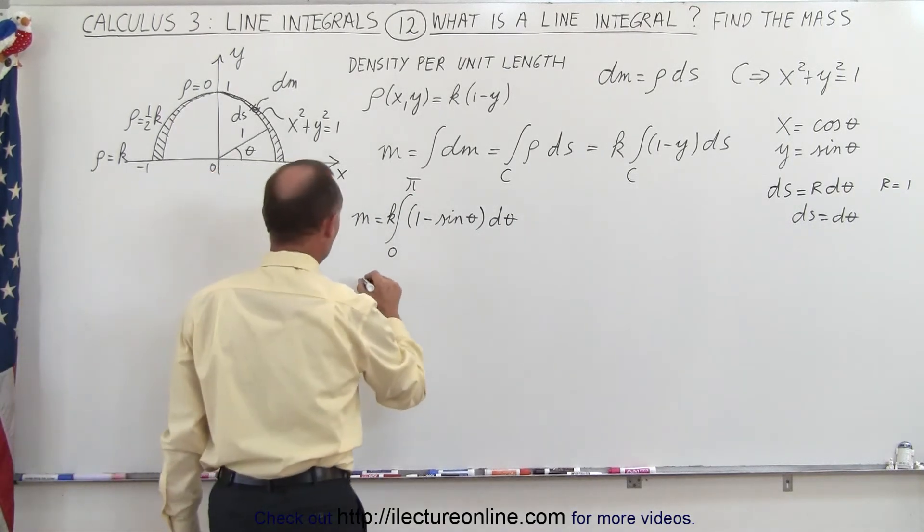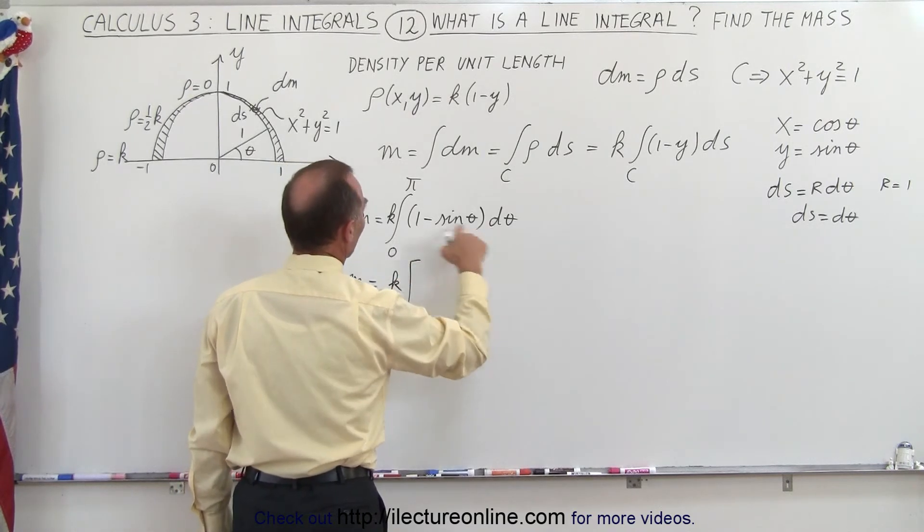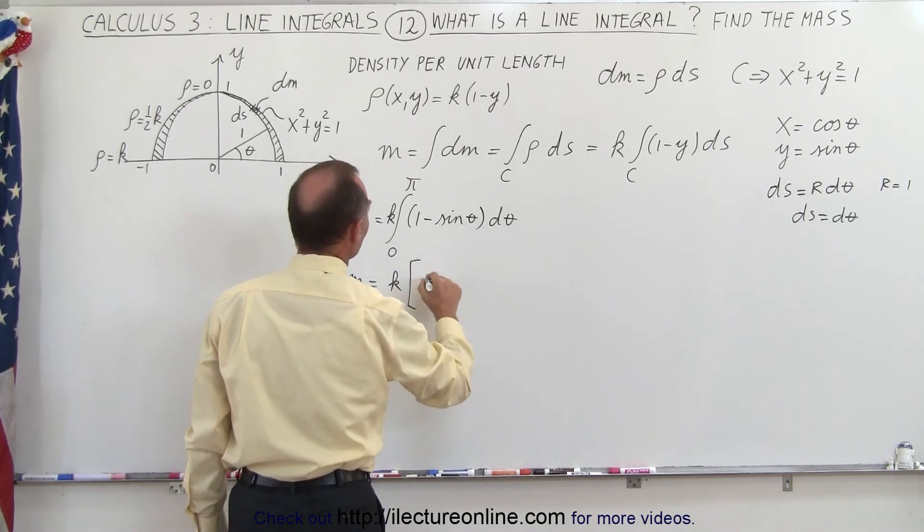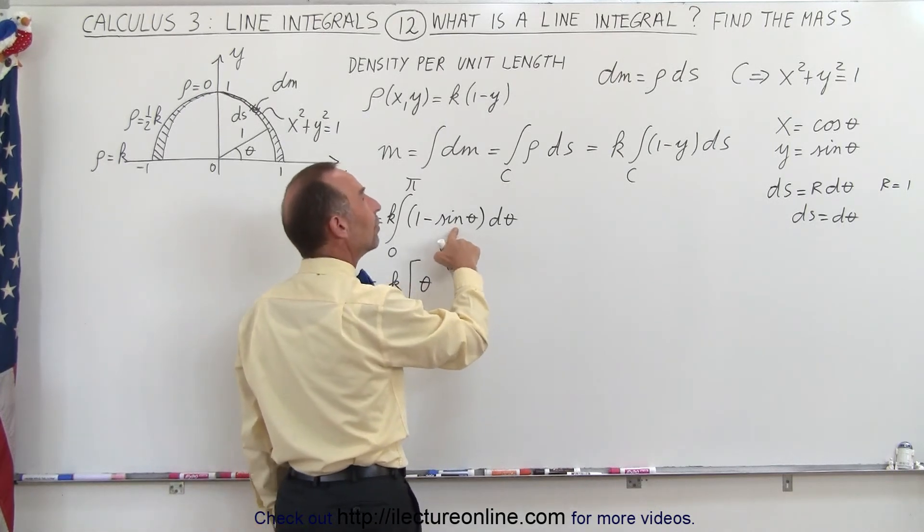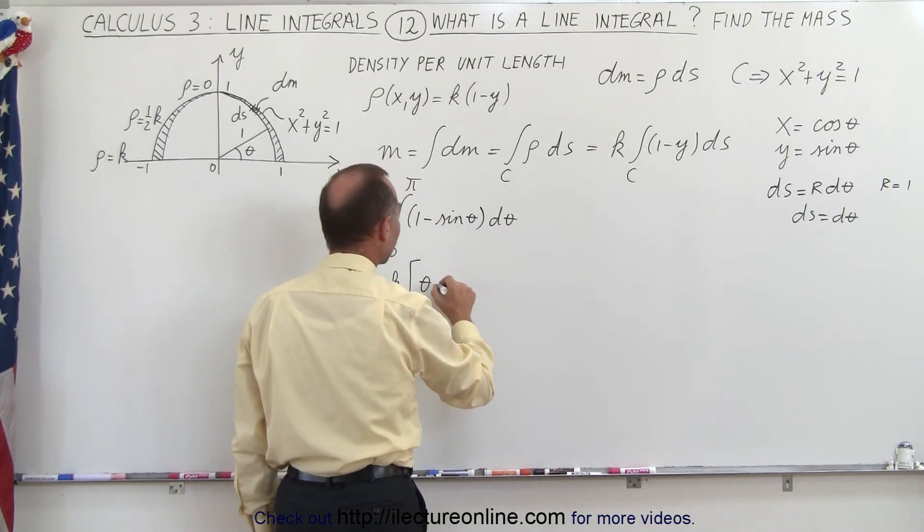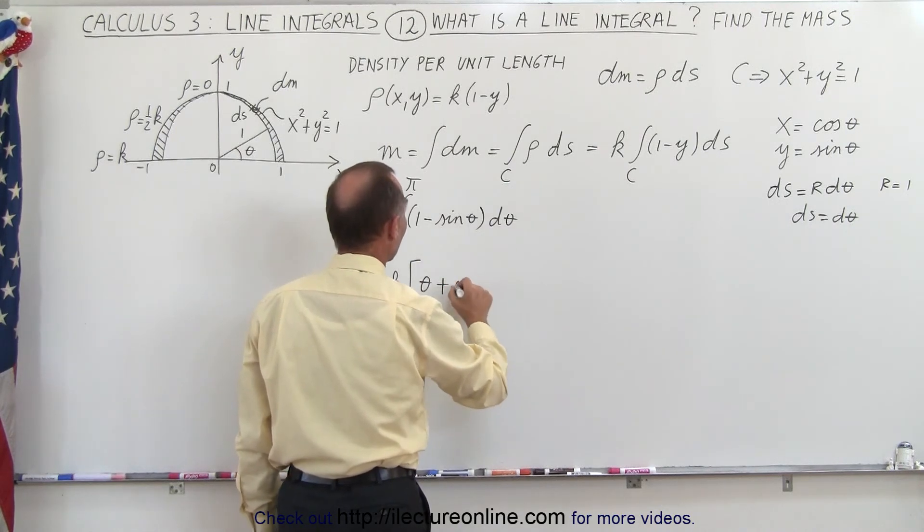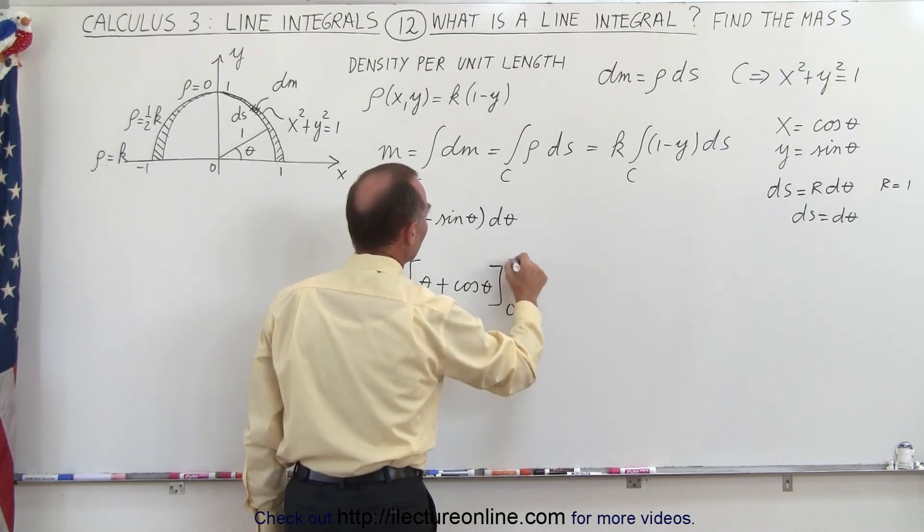So this becomes equal to k times 1 times d theta integrated to simply theta, and the integral of the sine, let's see, the derivative of the sine is the cosine, the integral is the negative sine, so it would be a negative cosine, so it should be plus times the cosine of theta evaluated from 0 to pi.